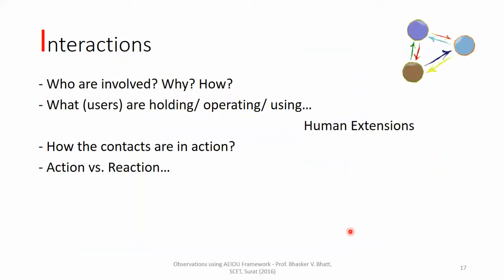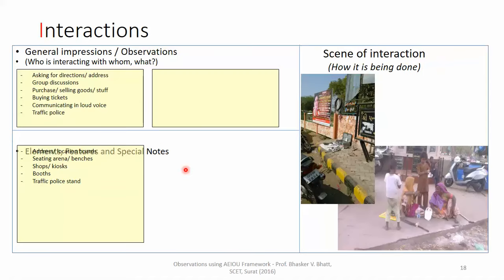We need to check out the interactions — who is actually involved, all the users, what they are holding, operating, or using. We need to check human extensions, how the contacts are in action, and we need to check out the reactions as well. If the user is using some object in a specific manner, we need to focus on that and think about whether the type of usage is appropriate or something unusual is happening. Some of the interactions were noted down.